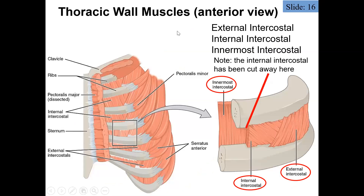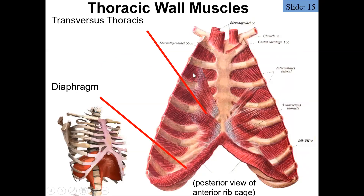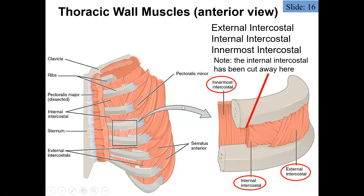Let's look at the thoracic wall muscles, specifically the muscles running in between the ribs — these are the intercostals. 'Inter' means in between, and 'costal' means ribs. We have three groups: the external intercostals, whose fibers run anteriorly and inferiorly; and the internal intercostals, whose fibers run inferiorly and posteriorly — pretty much the opposite direction — forming the second layer in superficial-to-deep order.